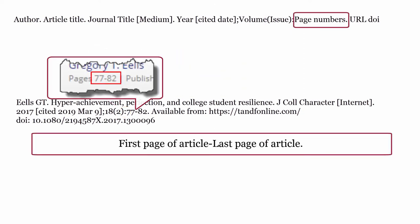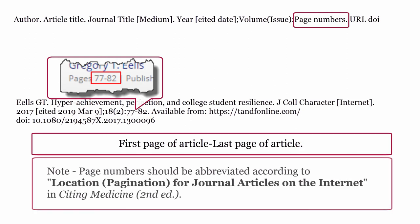Page numbers: give the page number on which the article appears. First page of article, dash, last page of article. End the page numbers with a full stop. Page numbers should be abbreviated according to Location, Pagination for Journal Articles on the Internet in Citing Medicine, second edition.